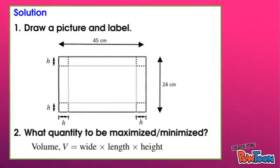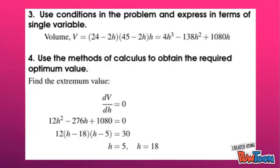The figure of the cardboard is shown. We want to find the maximum volume of the box, and the formula is V equals width times length times height. The given condition is each corner of the cardboard will be discarded. Hence, the volume can be rewritten as (24 - 2h) times (45 - 2h) times h, which is 4h³ - 138h² + 1080h.